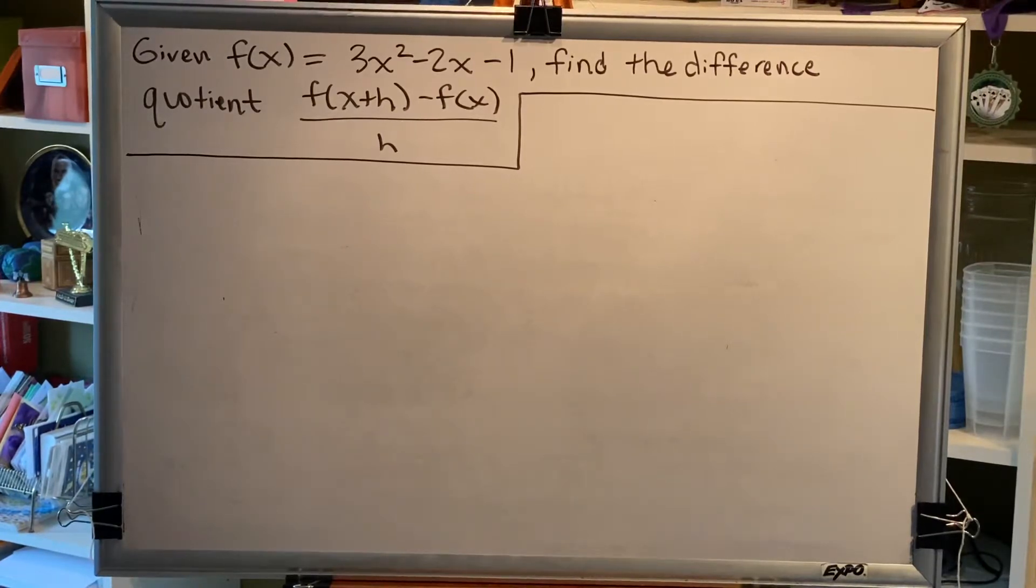The difference quotient is equal to a fraction whose numerator is f of the sum x plus h minus f of x, and whose denominator is h.